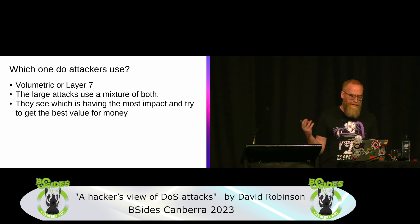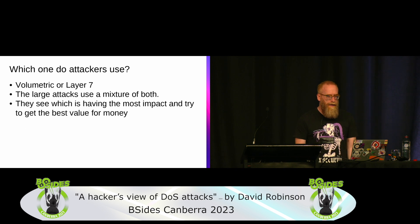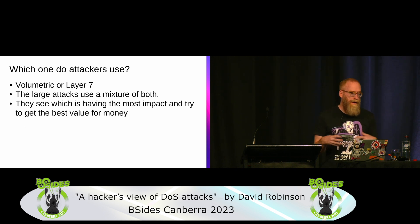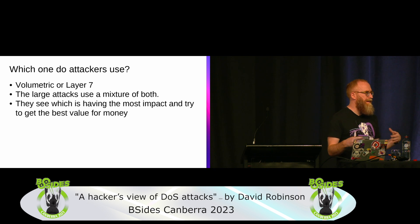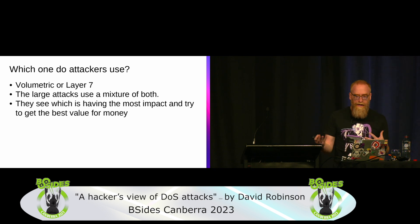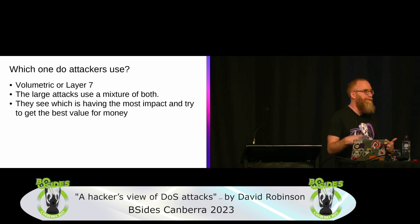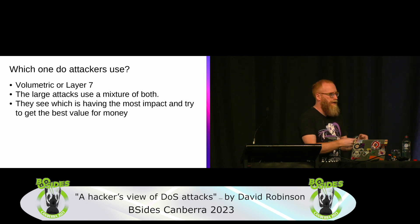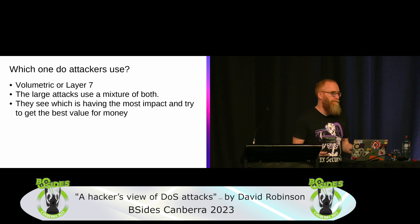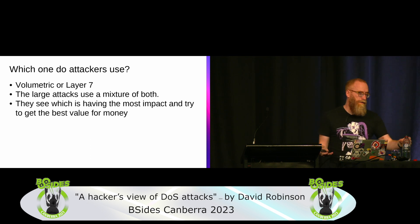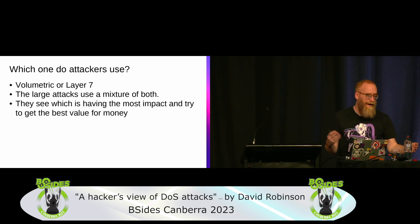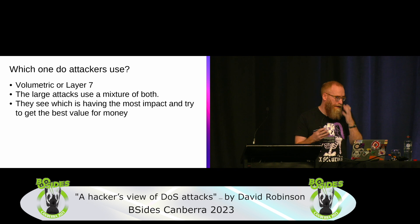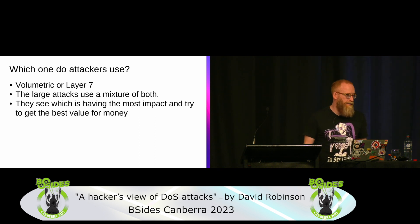Which attack type will attackers use — volumetric or layer 7? In a large attack, they'll most likely use both, because they have a limited number of bots in their botnet and want the best value. They want maximum impact on the target with the least resources on their behalf, so they can attack more targets and make more money.